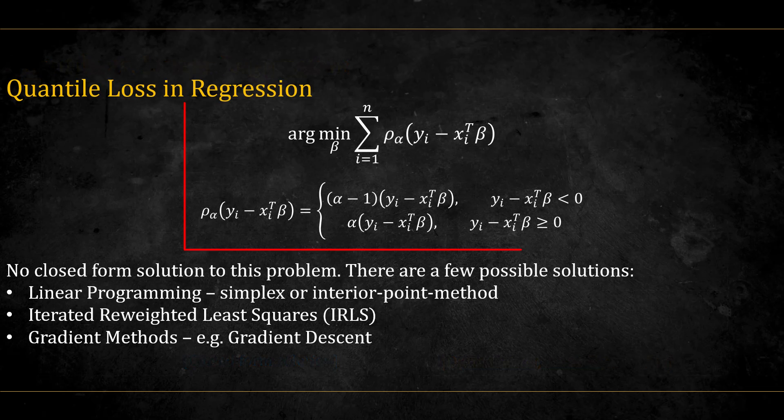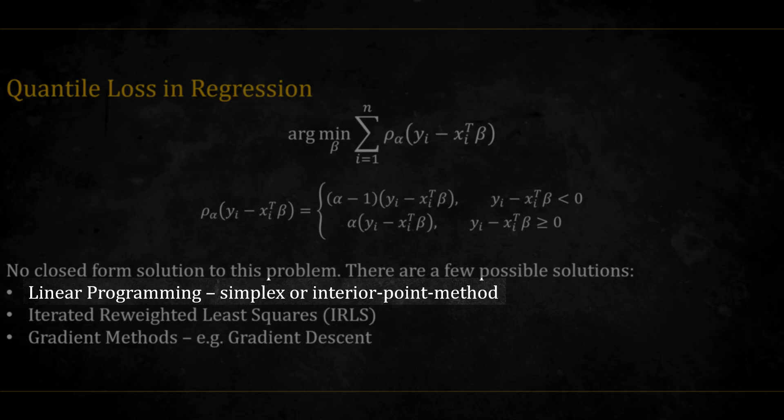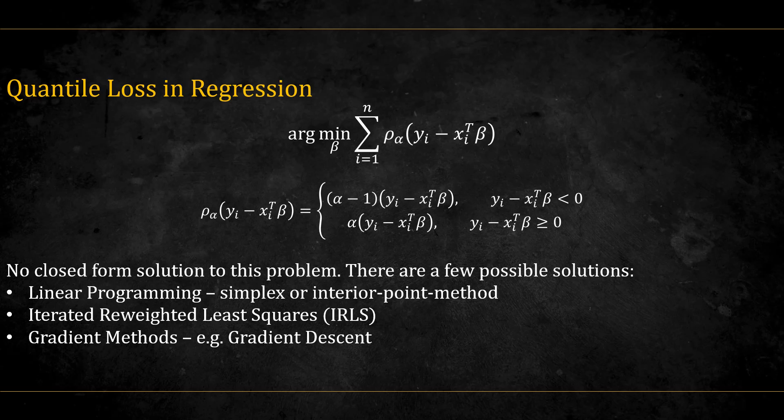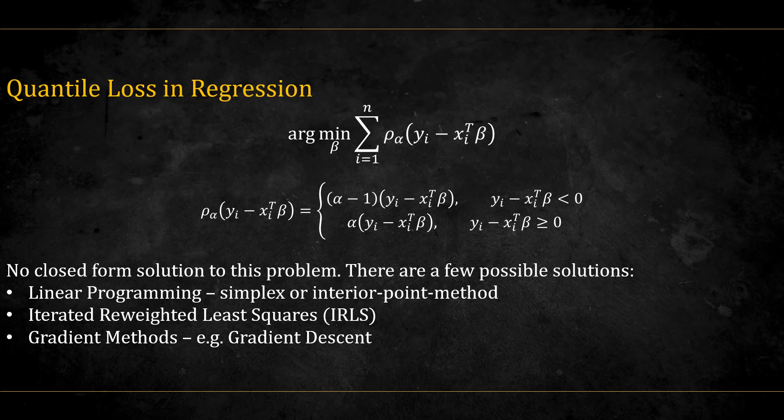So our problem is stated like this. We want to find the beta that will minimize the quantile loss, given by this equation here. There are a few ways to do so. Among them, formulating the problem as a linear programming problem and solving using linear programming methods, such as simplex or interior point methods. There's also iterated reweighted least squares, and gradient methods, such as gradient descent. We will go over each one of these separately.